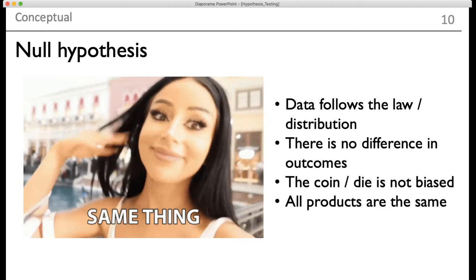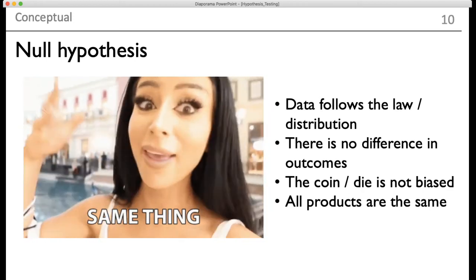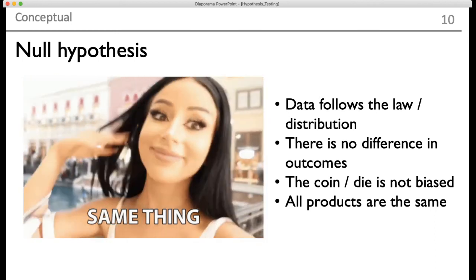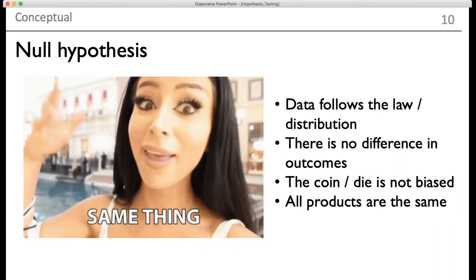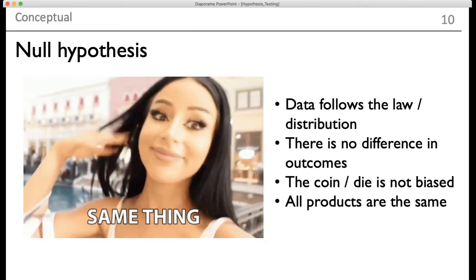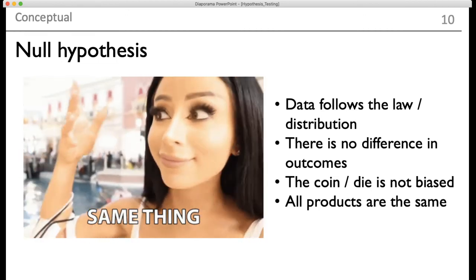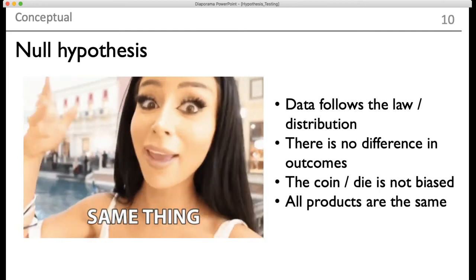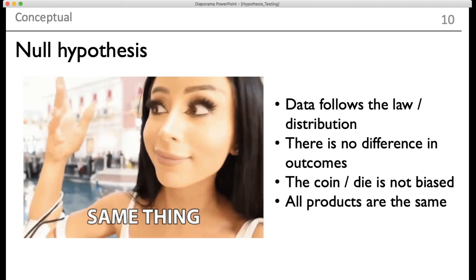When talking about statistical hypotheses, there are two basic terms. One is called the null hypothesis, which means there is no difference. As we can see on the slide, the null hypothesis states that data follows a particular law, theory, or distribution; the coin or die is not biased; or all products are the same. For example, comparing various health drinks in the market, the null hypothesis says all products are the same.